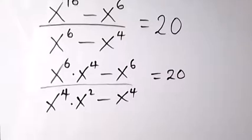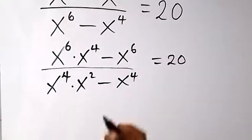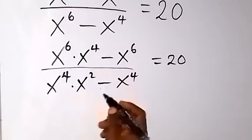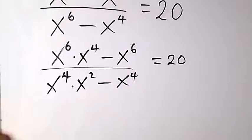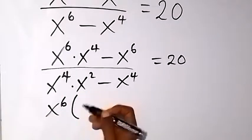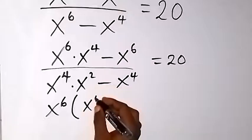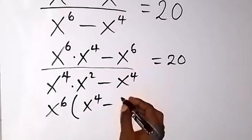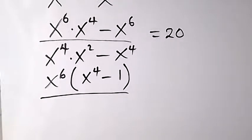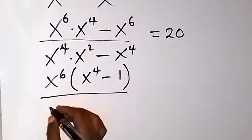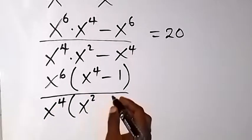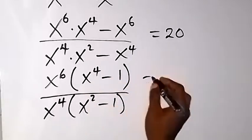Now we factor what is common. In the numerator, x^6 is common, so we take it out: x^6 times (x^4 - 1). In the denominator, x^4 is common, giving x^4 times (x^2 - 1), and this equals 20.